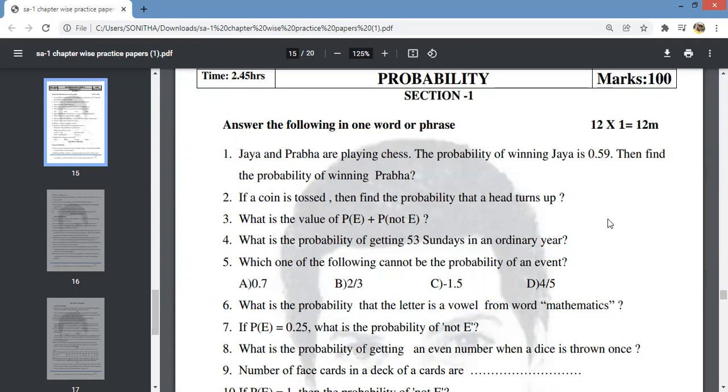The first question is: Jaya and Prabha are playing chess. The probability of winning Jaya is 0.59. Then find the probability of winning Prabha. Very simple.